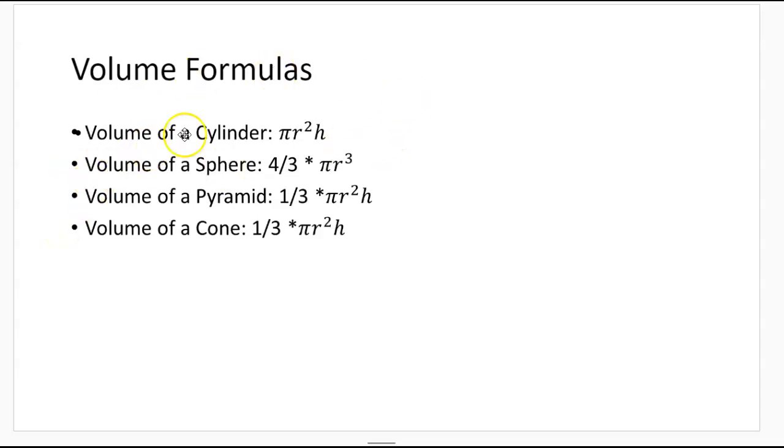The volume of a cylinder is πr²h. We get this πr² from the area of the circle, and h is the height.